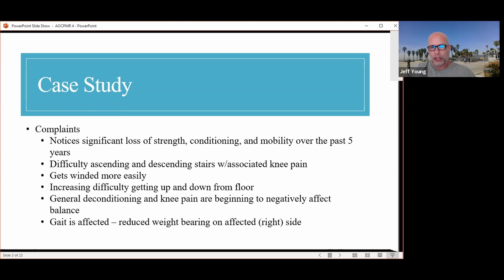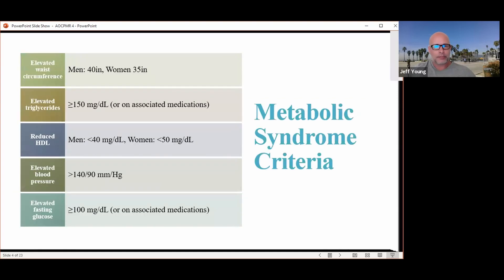General deconditioning and knee pain are beginning to negatively affect his balance, and his gait is starting to be affected. He's starting to reduce weight bearing on his affected right side. For metabolic syndrome, you need to have at least three of the five following criteria: elevated waist circumference — his was above 40 — elevated triglycerides, reduced HDL, elevated blood pressure, and elevated fasting glucose. He meets the criteria for metabolic syndrome.